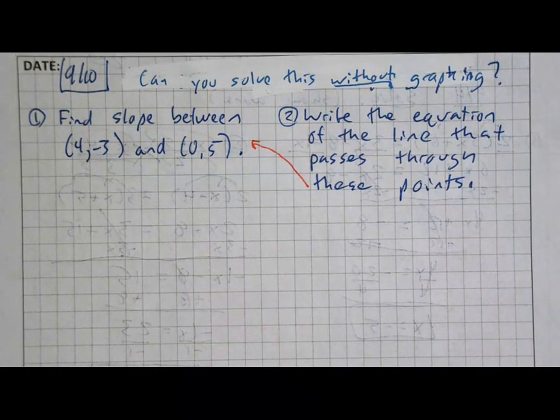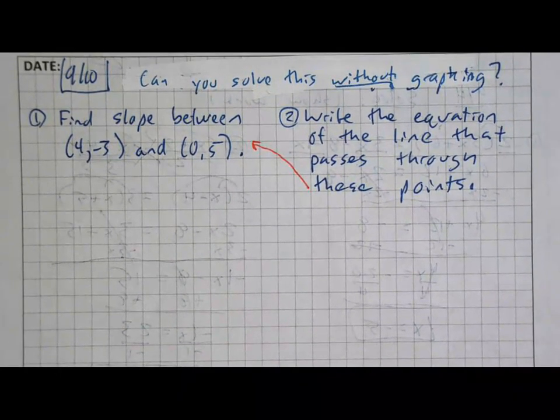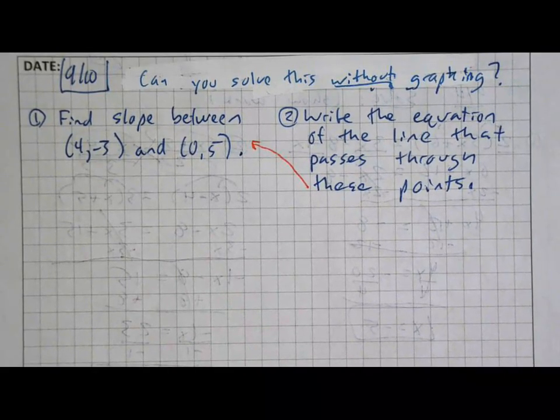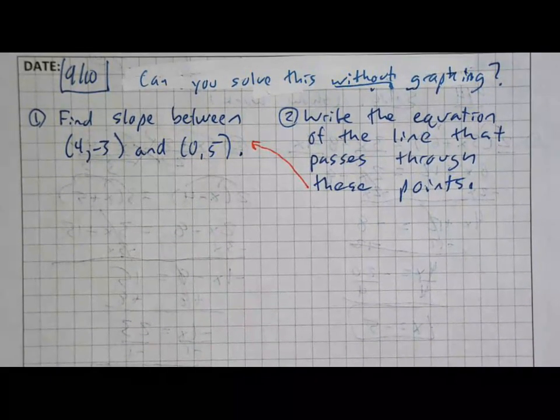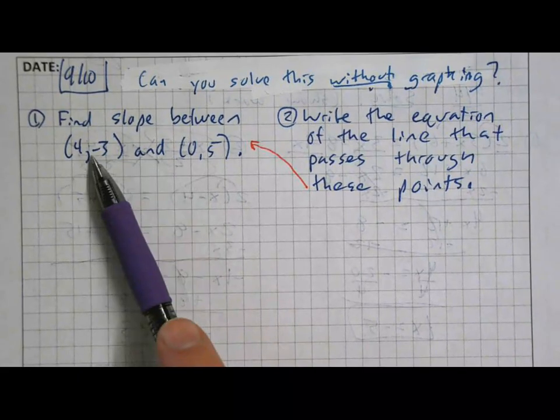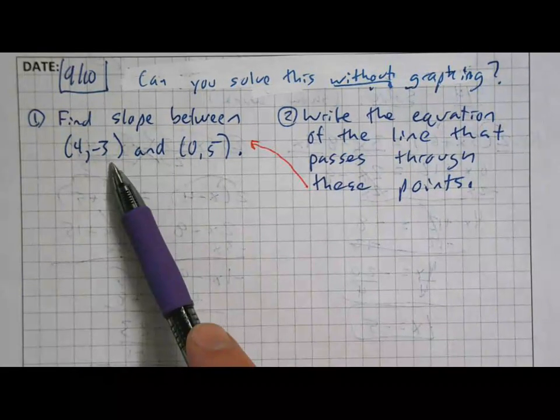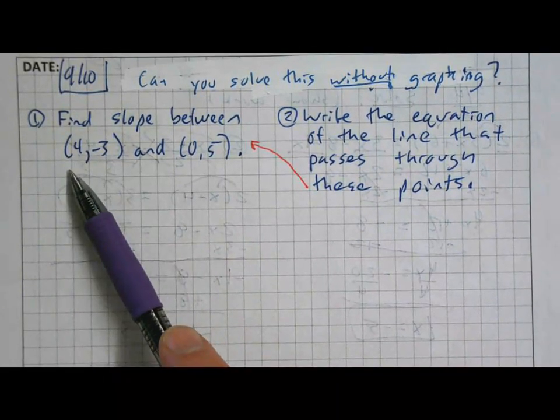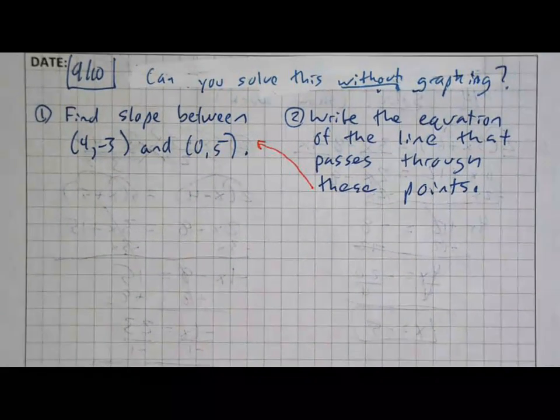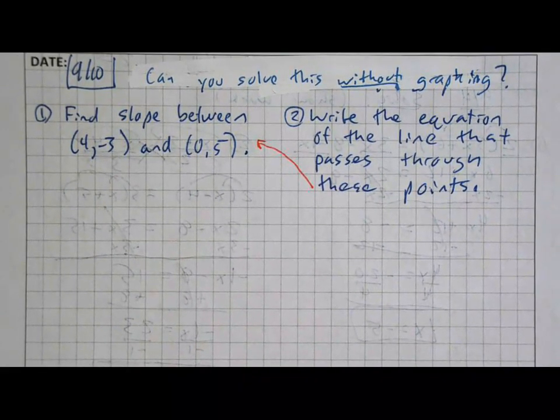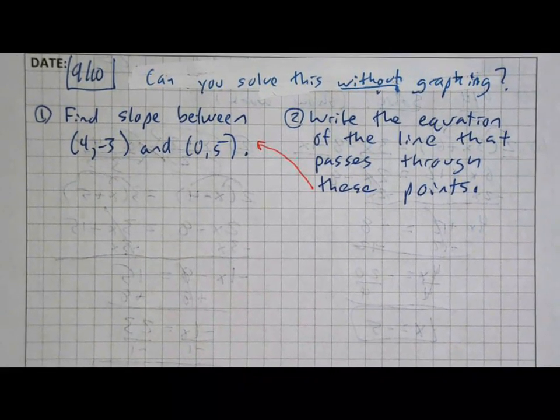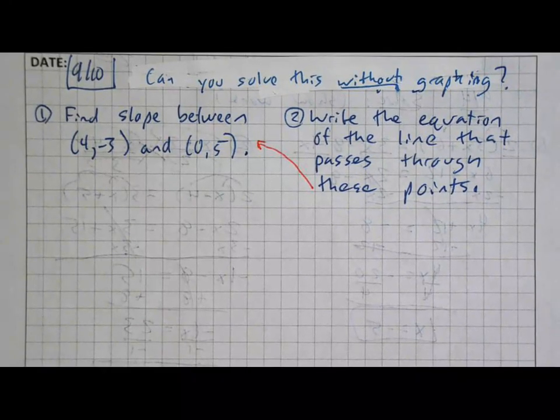Some of you might be thinking the question right now, why would I need to do this without graphing if I can accomplish it by graphing? And my reason for that would be, what if you ever ran into a situation where it wasn't 4 negative 3, but it was like 457 negative 358? If that were the case, you would not want to do that by graphing because it would take forever to count out where that point would be.